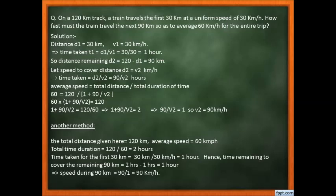Now, average speed is given as 60 km/h. Using the formula: average speed = total distance / total time, we write: 60 = 120 / (1 + 90/V2). Cross-multiplying: 60 × (1 + 90/V2) = 120, so 1 + 90/V2 = 120/60 = 2. Solving this gives V2 = 90 km per hour.